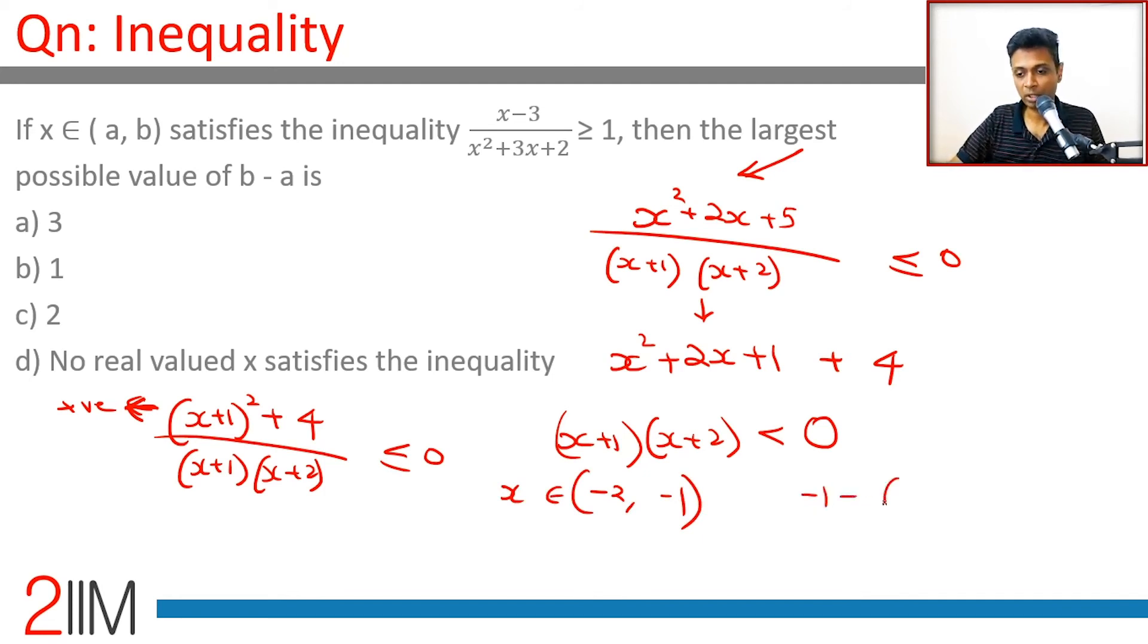The largest possible value of b minus a is -1 minus (-2), which is 1. The distance between -2 and -1 is 1. Let's put this answer. Wonderful question, really tough question. Bring it to one side, compare with 0, simplify.